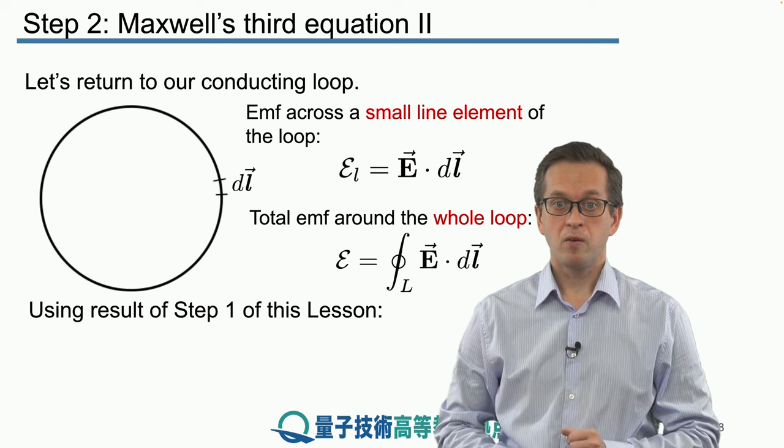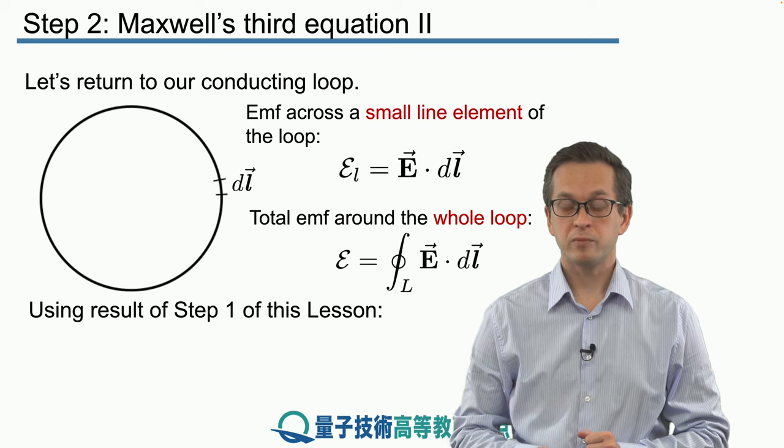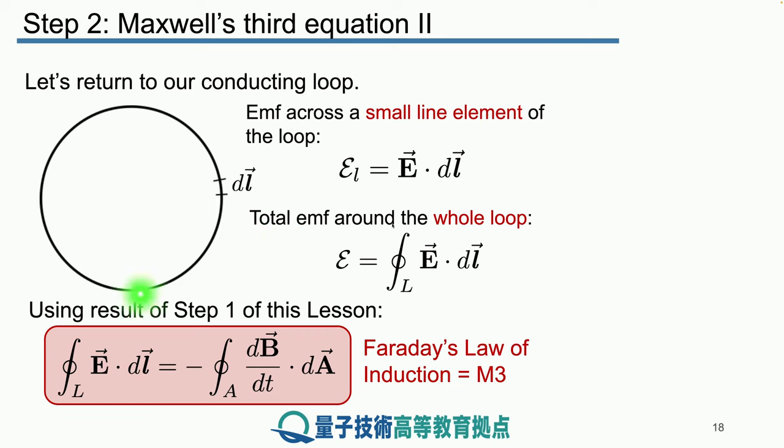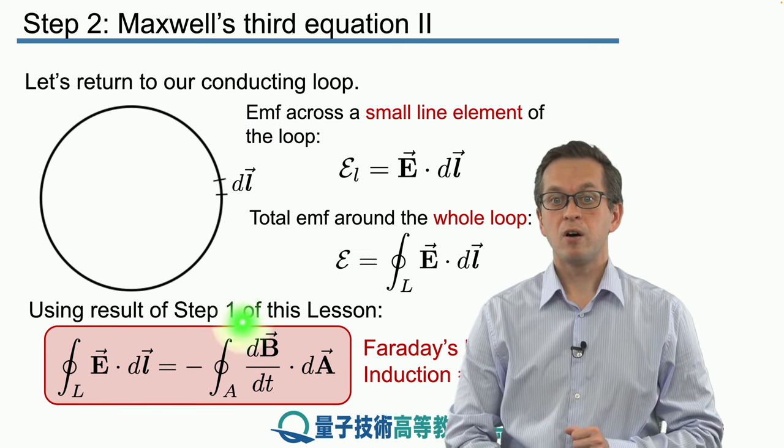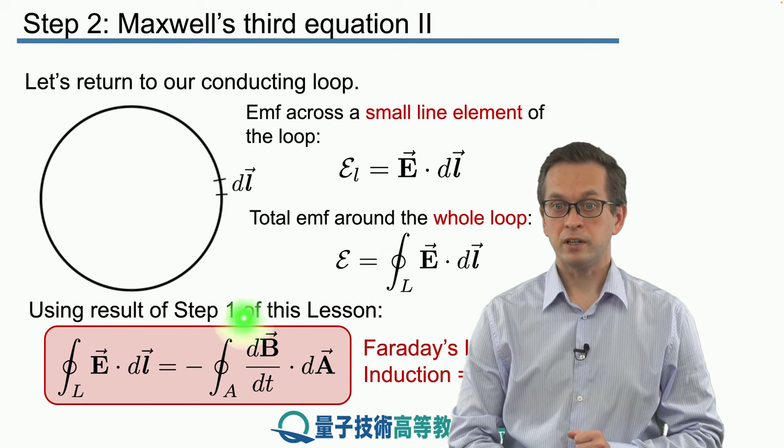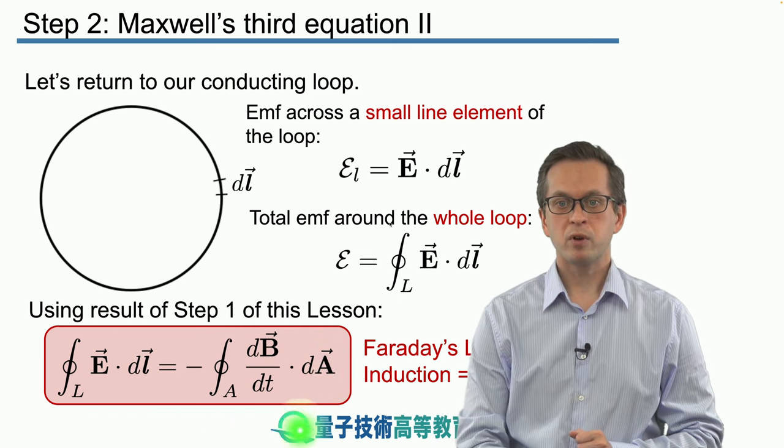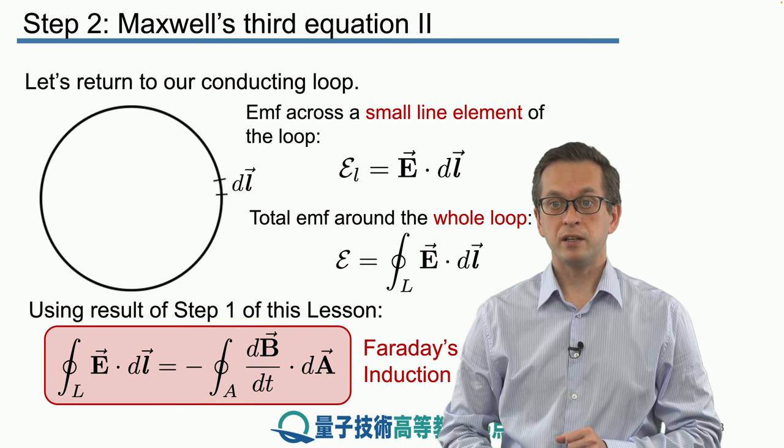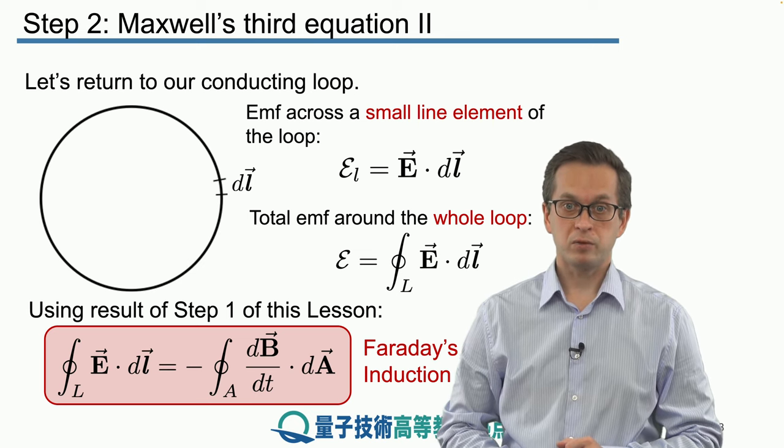And this way, combining this result with our previous result from step one, we arrive at the following expression. We arrive at Maxwell's third equation. We have that the integral of E dot dl around this closed loop is equal to the negative of the surface integral of the change of the magnetic field dot dA. So this expression here, before we were writing in terms of the magnetic flux, now we are explicitly writing it in terms of the magnetic field. And this law is known as Faraday's law of induction or Maxwell's third equation.